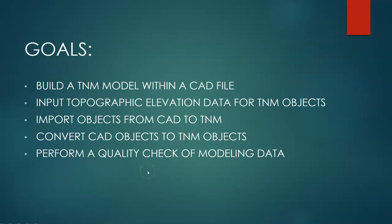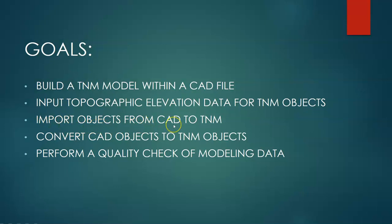Here's a high-level overview of the steps we'll cover, and we can think of these as goals to achieve in the modeling process. First we'll set up the model in a CAD file. Next we'll talk about different methods for handling elevation data for the TNM objects — this can be done using a three-dimensional topographic elevation file if available, but we'll also cover cases where only a two-dimensional contour file is available and a more manual process is required. After that we'll import objects from the CAD format to TNM, convert them to TNM objects, and perform a quality check of the modeling data, checking for errors or missing information.